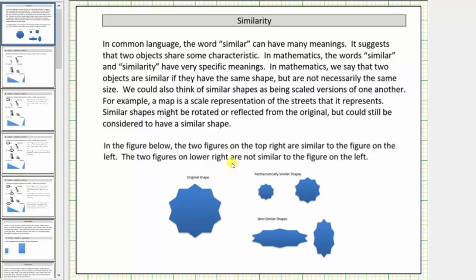The two figures on the lower right are not similar to the figure on the left because they are not the same shape. It appears as if this figure has been vertically compressed and this figure has been horizontally compressed in relation to the original shape.